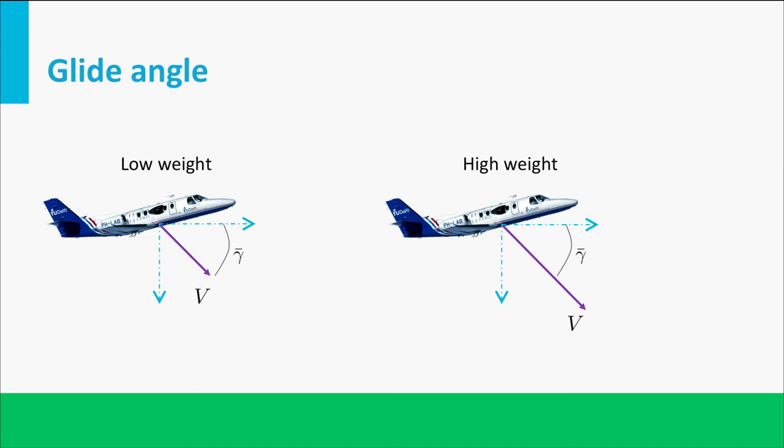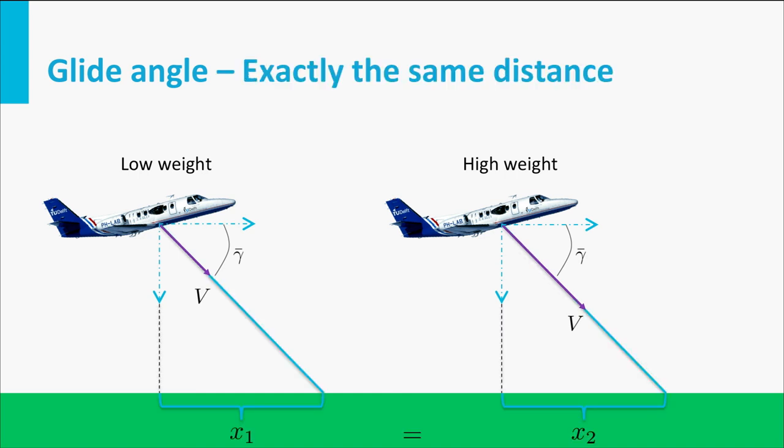Now let's visualize the airspeed vectors. The magnitude is different, but the direction is the same. So both aircraft will reach the same point on the ground. But the lighter plane will take more time to arrive there.